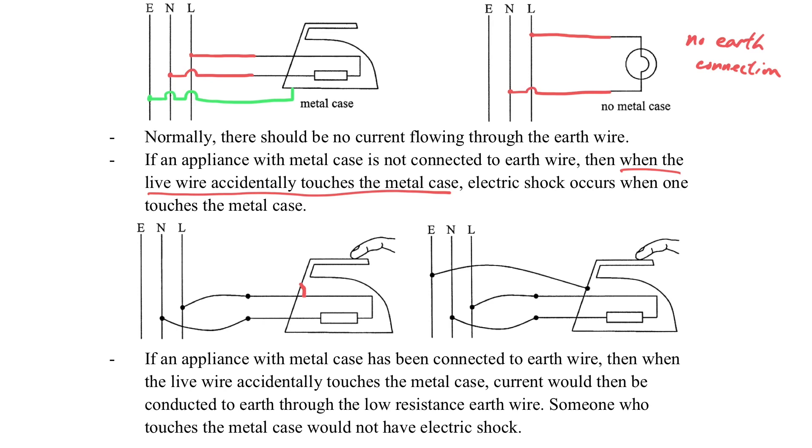If the live wire accidentally breaks and touches the metal case, then the whole metal case will be in high potential. If you still remember what we have just gone through, if we touch on the high potential because we are standing on the earth, then there is a potential difference across our body and we may get electric shock if we touch the metal case when the live wire is also touching the metal case.